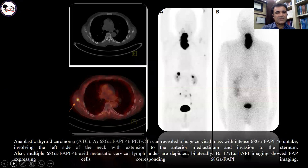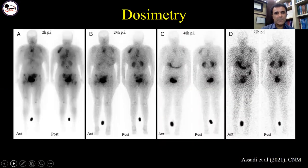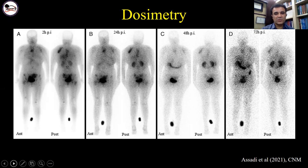A case with anaplastic thyroid cancer — one of the deadliest cancers — showed some response in the second cycle of lutetium FAPI-46, but ultimately progressed. According to dosimetry and biodistribution, there was slight uptake in normal organ tissue, indicating safety similar to other common therapeutic agents in nuclear medicine like lutetium PSMA and lutetium dotatate.